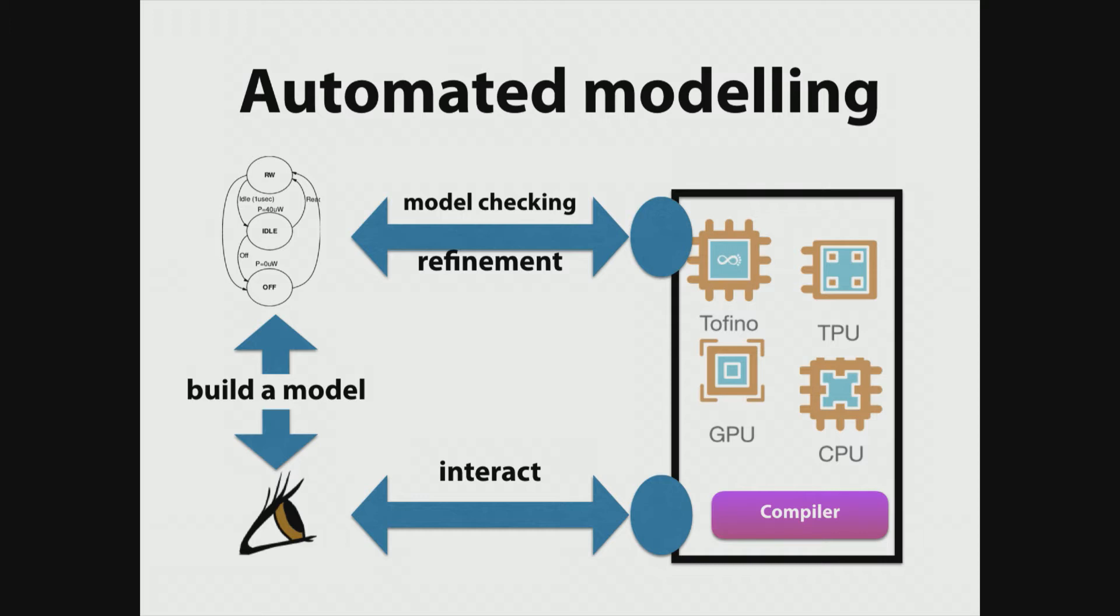So we're going to look at automated modeling as a sort of crystal ball approach. And the idea is the following. We want to have one of these gadgets like a Tofino chip or a TPU or a certain implementation of a compiler. And we want to look at these things as if they are absolute black boxes. So, we're going to interact with them, but we don't know who implemented it or how they implemented it. The only thing we know is what type of actions this code or this hardware is able to perform.